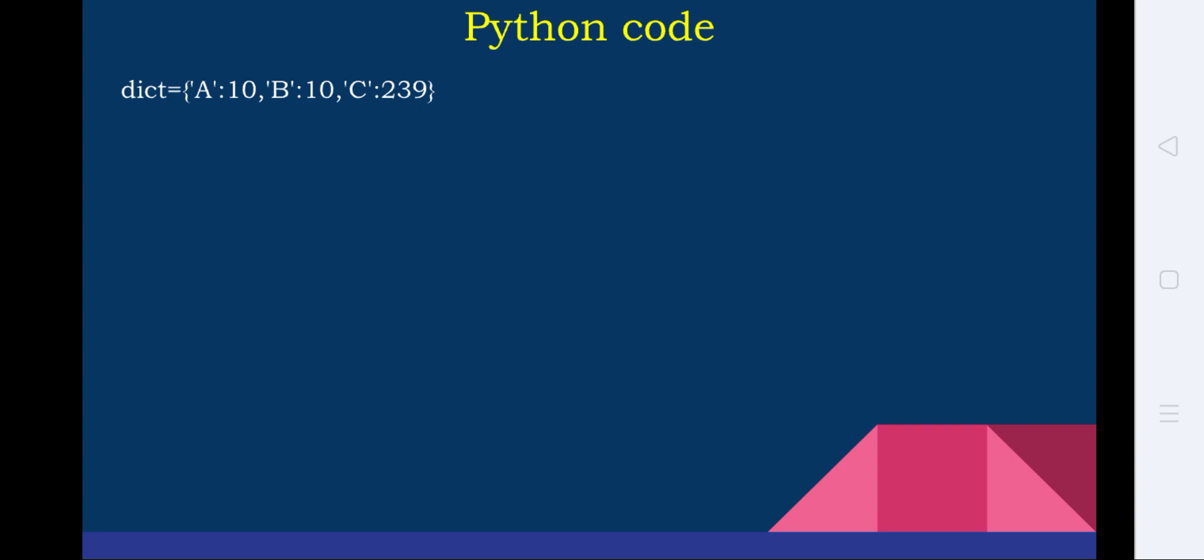That means it is equal to saying A is equal to 10, B is equal to 10, and C is equal to 239. This is one way of mentioning data in the dictionary, and now we have defined one dictionary.